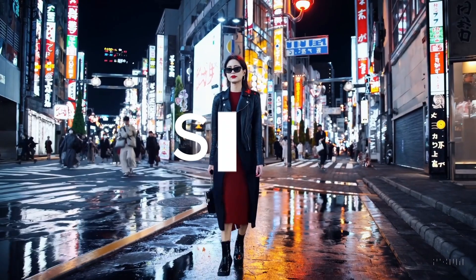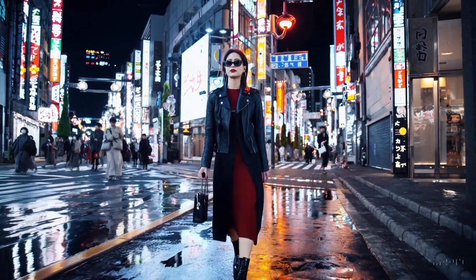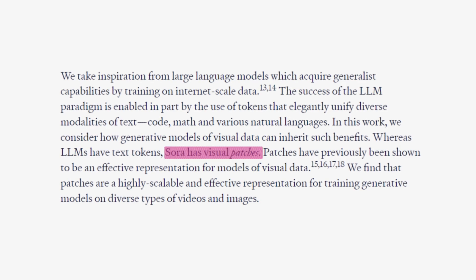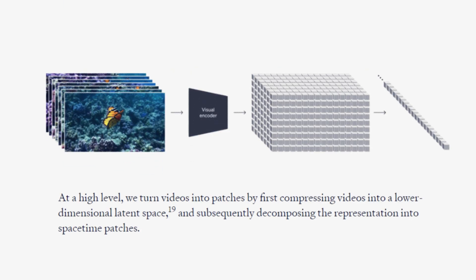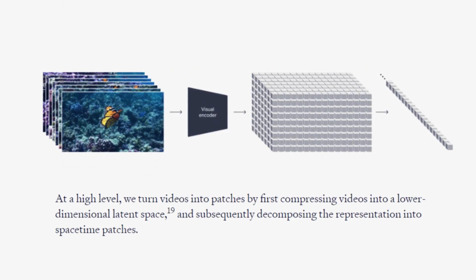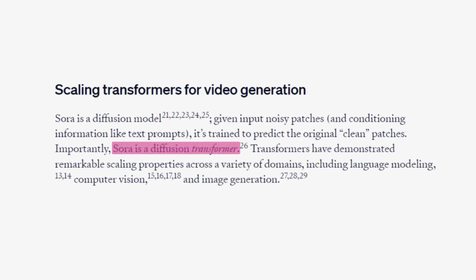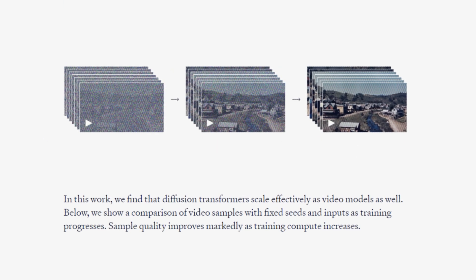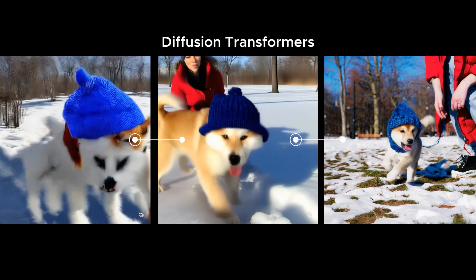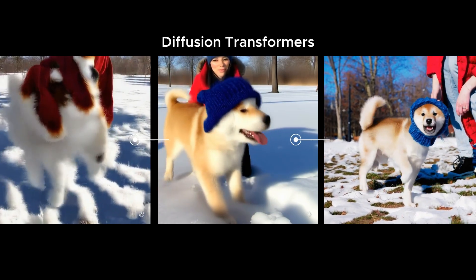The model was trained by breaking down videos into what's called visual patches, and by utilizing a technology called Diffusion Transformer. It's trained to become highly capable of producing higher quality images as its training goes on.